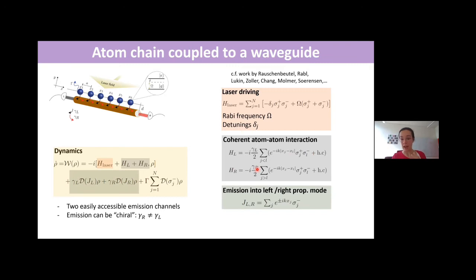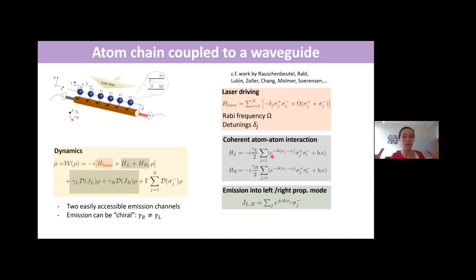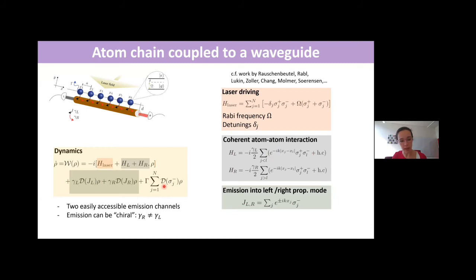By the guided modes, you also have incoherent emission — two collective dissipators D with collective jump operators. The jump operators are extremely collective: they sum over all single-atom σ_j^minus operators, each multiplied by e^{±ikx_j}, where x_j are the positions of the atoms. So all atoms are involved in each decay process.